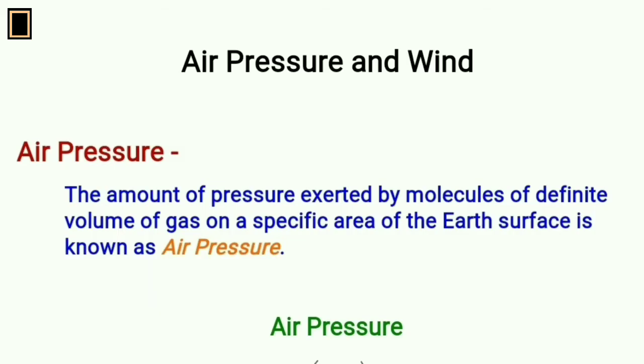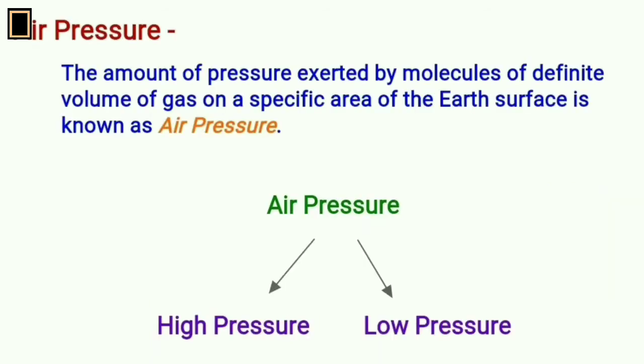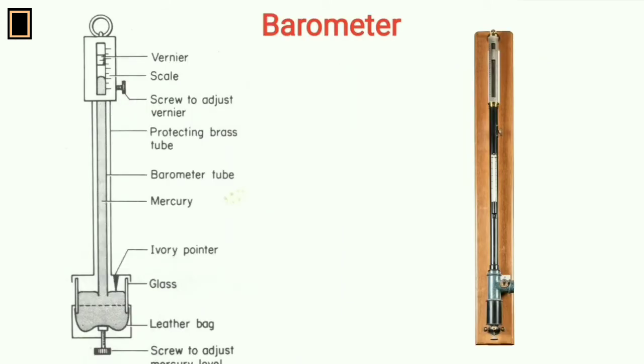Air pressure and wind: The amount of pressure exerted by molecules of definite volume of gas on a specific area of the earth's surface is known as air pressure. Air pressure can be classified into two: high pressure and low pressure. The instrument for measuring atmospheric pressure is called barometer or Fortin barometer.